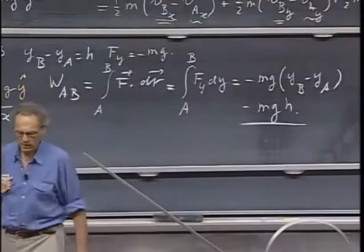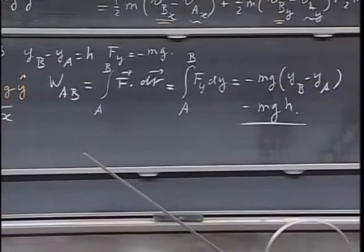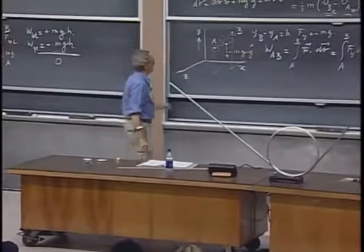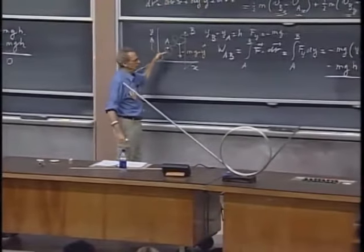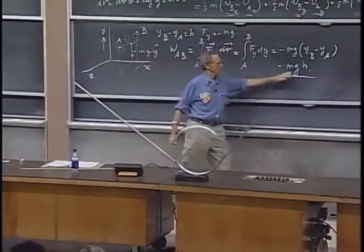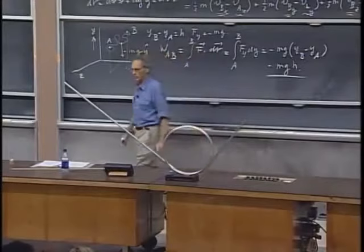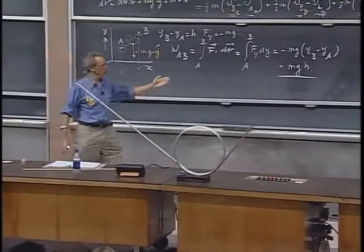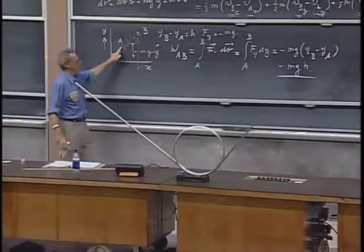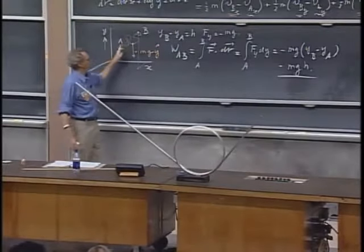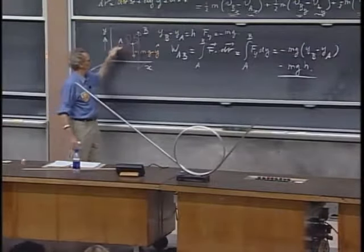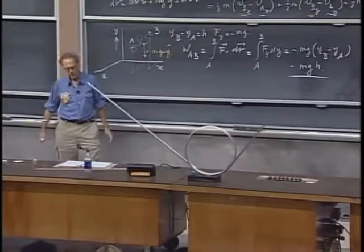And what you see here is that it is completely independent of the path that I have chosen. It doesn't matter how I move. The only thing that matters is the difference in height between point A and point B. h could be larger than zero if B is above A, it could be smaller than zero if B is below A, it could be equal to zero if B has the same height as A.